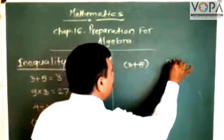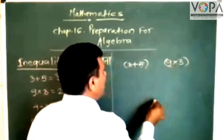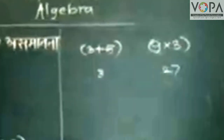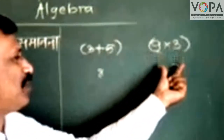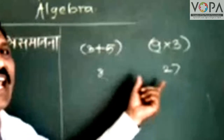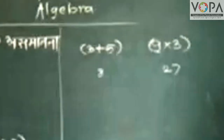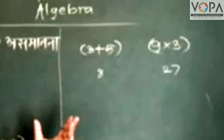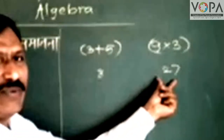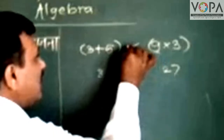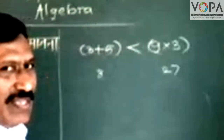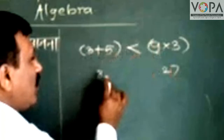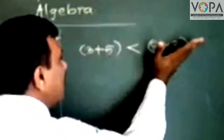9 into 3 — the answer is 20, the answer of this is 8, and the answer of this is 27. So the answer of this expression is 8 and the answer of this expression is 27, meaning 8 is less than 27. The inequality tells us that 3 plus 5 is less than 9 into 3.